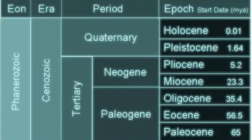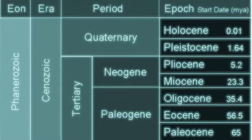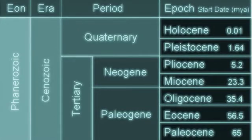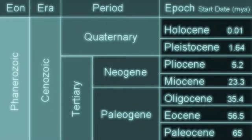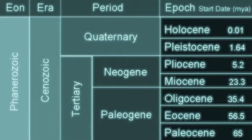The Cenozoic era is called the Cenozoic era because it means 'new life' in Greek. All of the dinosaurs went extinct and mammals started to show up.